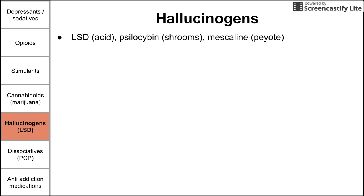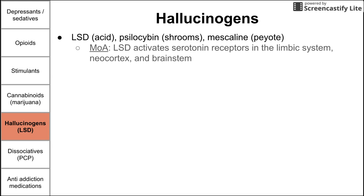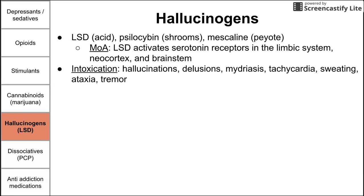Next are hallucinogens — mainly LSD, also called acid. There's also psilocybin, the active ingredient in psychedelic mushrooms, and peyote, a cactus with the active ingredient mescaline. The mechanism of action is that LSD activates serotonin receptors in the limbic system, the neocortex, and the brainstem. Intoxication produces hallucinations, delusions, mydriasis (pupil dilation), tachycardia, sweating, ataxia, and tremors. Magic mushrooms may also add euphoria and paranoia.